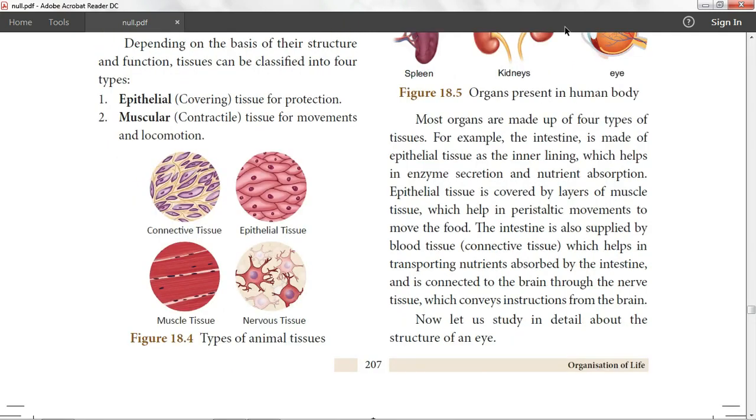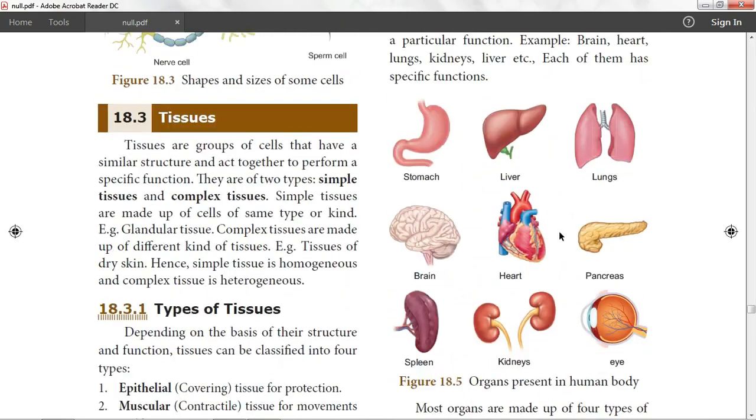Epithelial tissue is for protection. It is a covering tissue for body surface. Muscular tissue is for movements and locomotion.